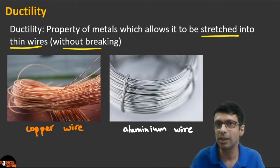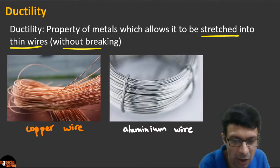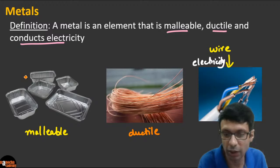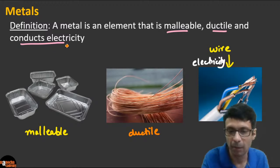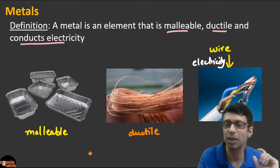To summarize: metals are malleable — they can be beaten into thin sheets like aluminium foils. They are ductile — like copper wires. And metals are used to make wires because they are good conductors of electricity. These are very important properties of metals.